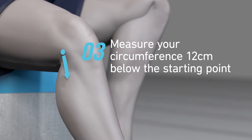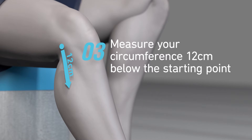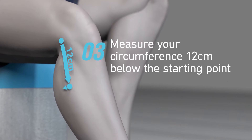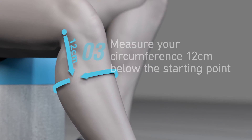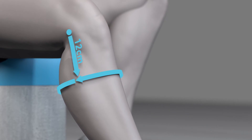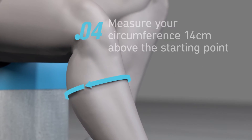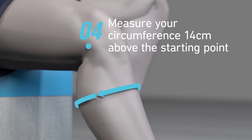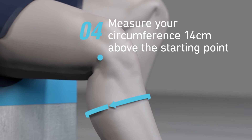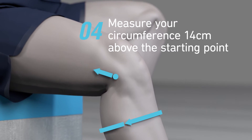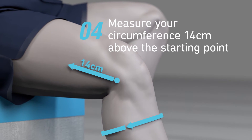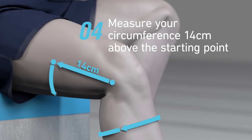Measure and record your calf circumference 12 cm below the starting point. Measure and record your thigh circumference 14 cm above the starting point.